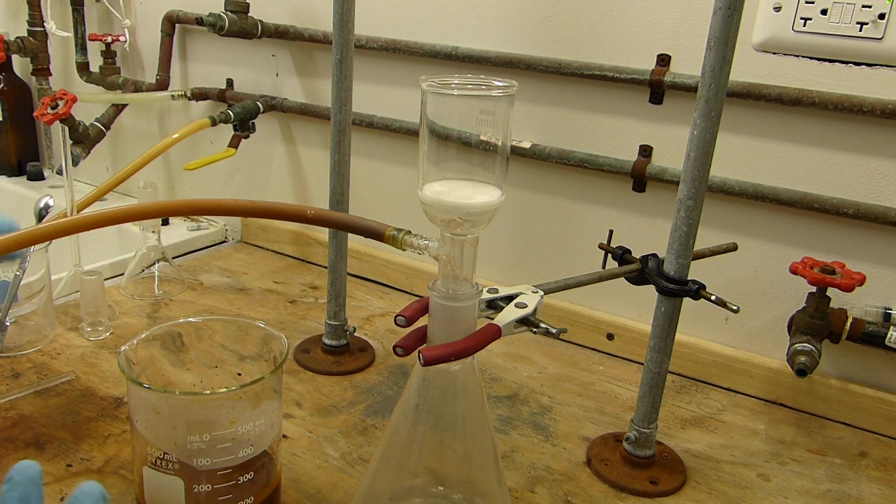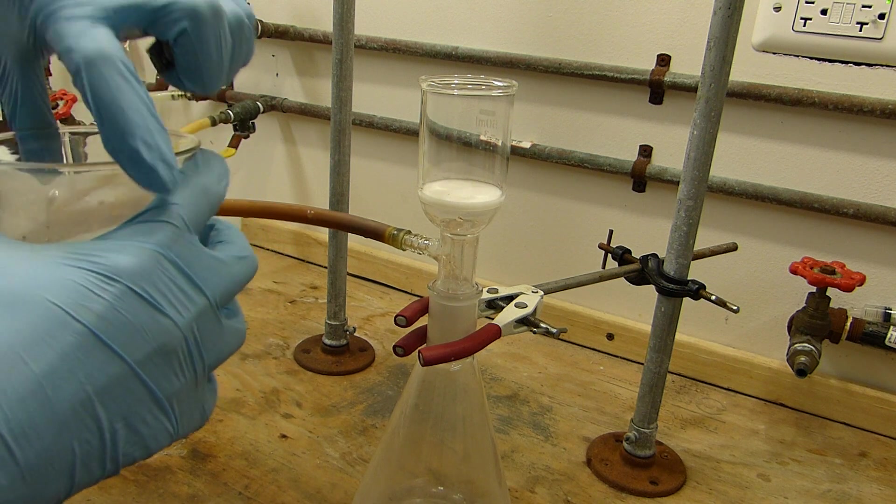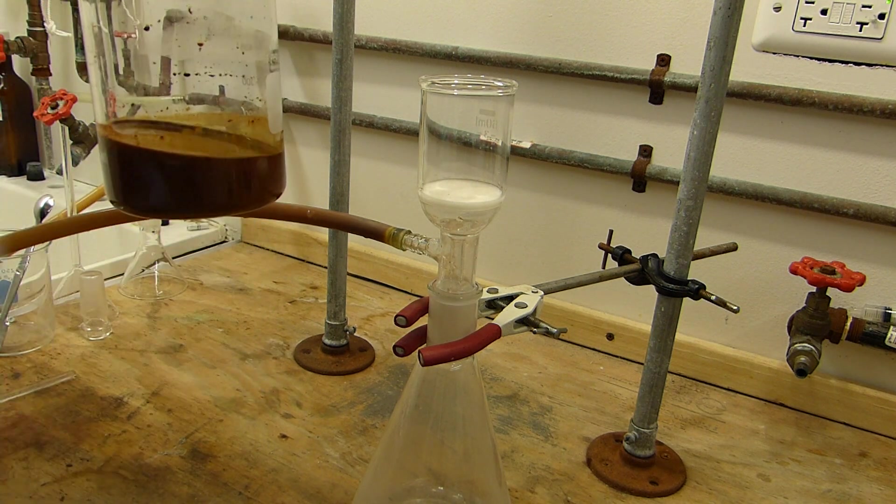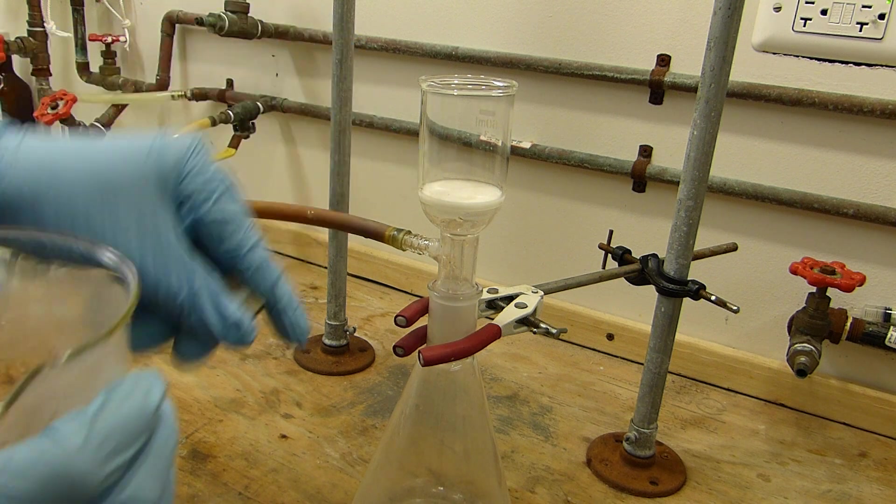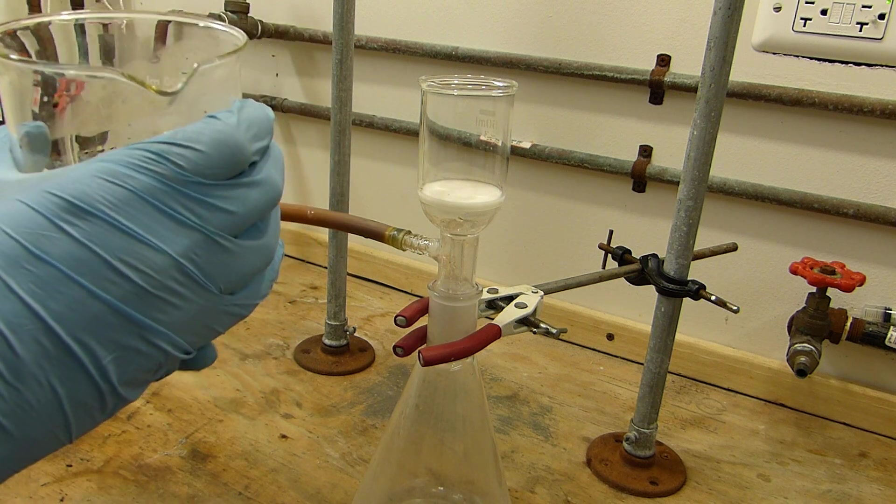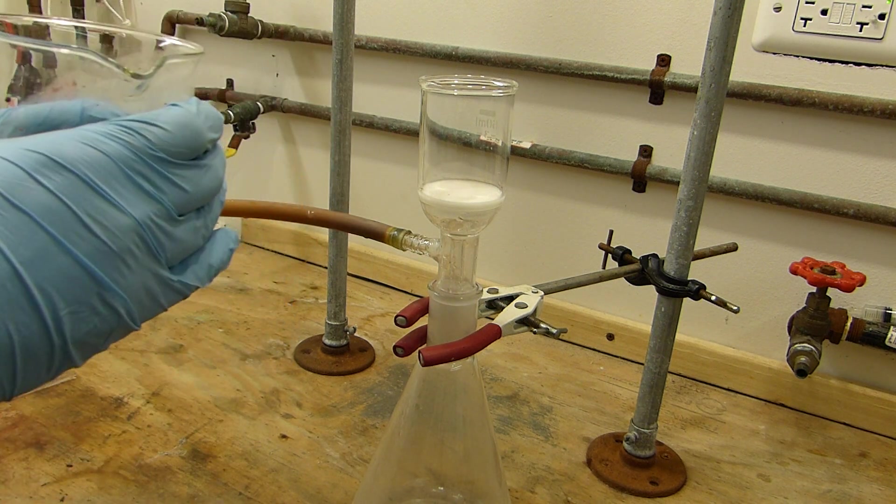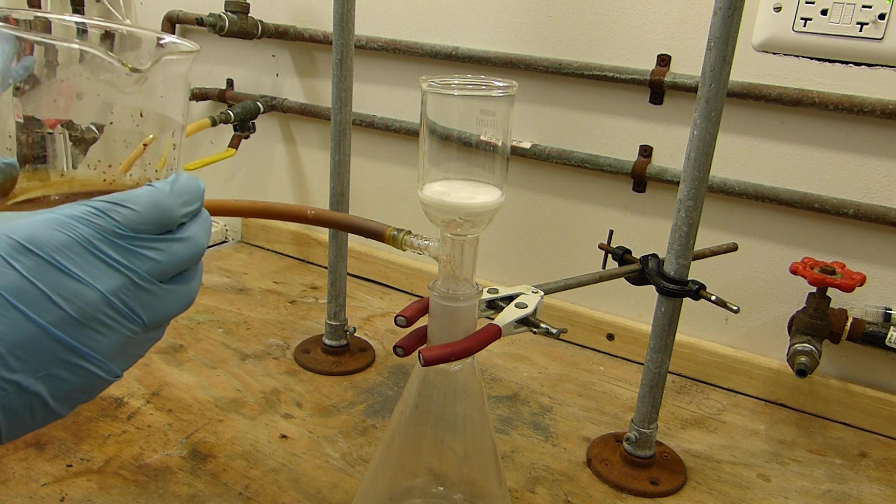All right. I've set up now for vacuum filtration. And I've got the solution here, or the mixture now, with the precipitate. I'll filter that out. And first, this time, I'm going to stick the stir bars to the bottom of the beaker with a magnet. Don't forget that. That's how you break a lot of glassware. All right. Let me get the vacuum on. I apologize for the noise.